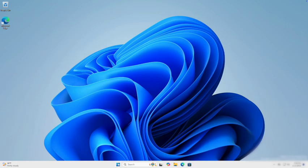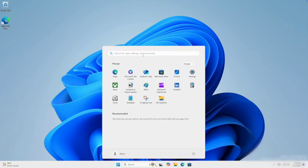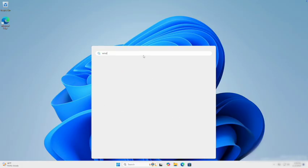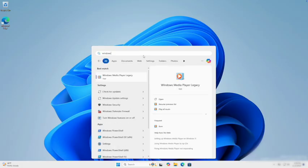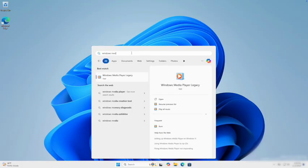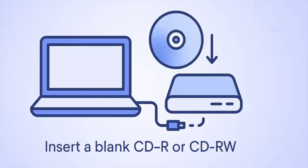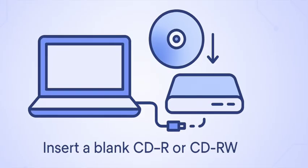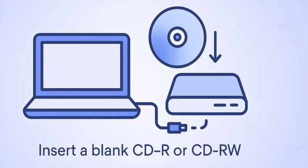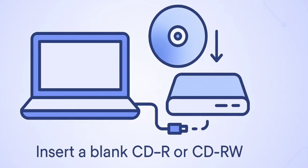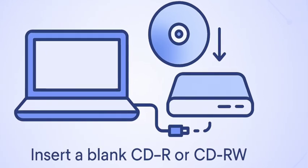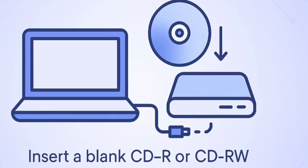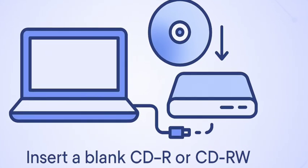Once you have your CD burner connected to your computer, open Windows Media Player. If you don't see it, click the search bar, type Windows Media Player, and open it from the results. Now insert your blank CD-R or CD-RW into the disc drive. Windows Media Player will detect it automatically and show the blank disc on the right side.